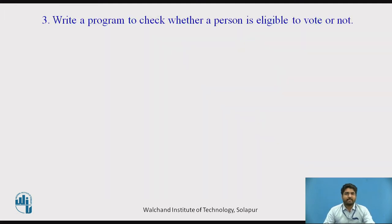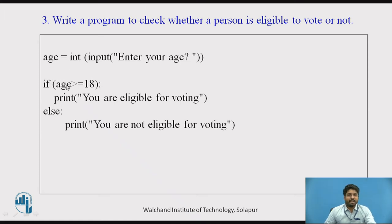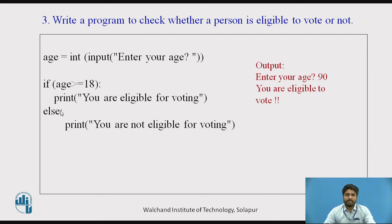Next, check whether a person is eligible to vote or not. If the age is greater than or equal to 18, it prints 'you are eligible for voting', else 'you are not eligible for voting'. If the user enters age as 90, the condition is true, so it prints 'you are eligible for voting'.